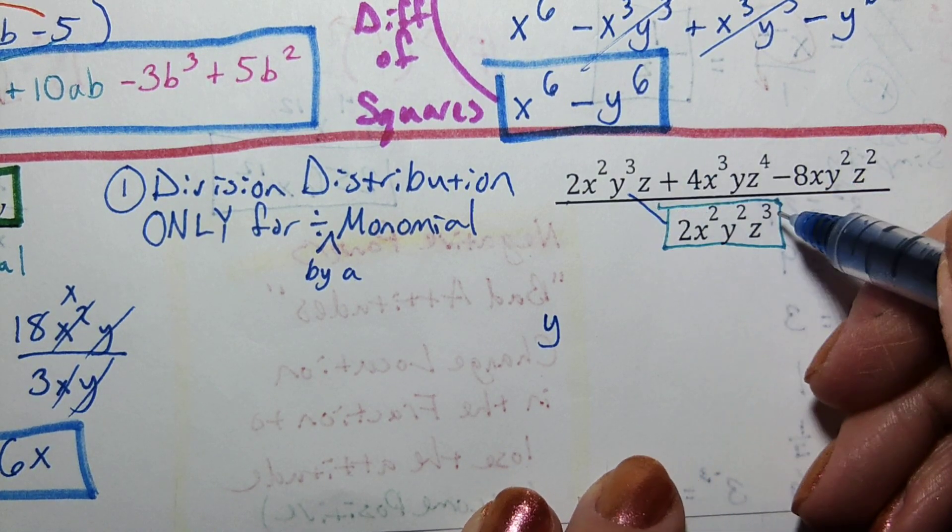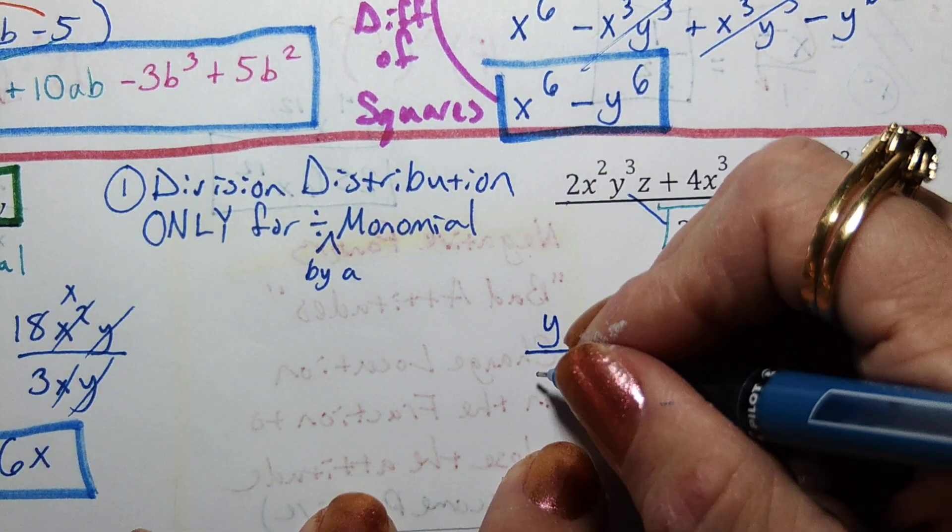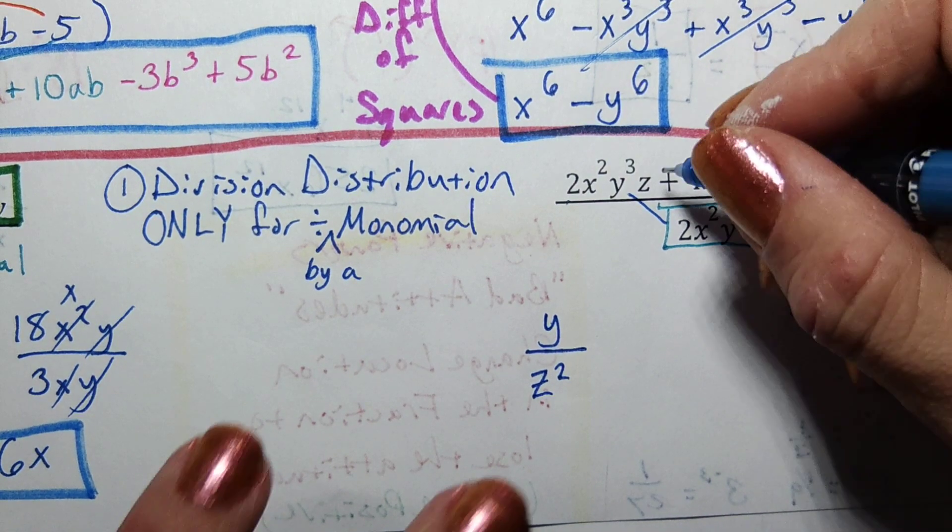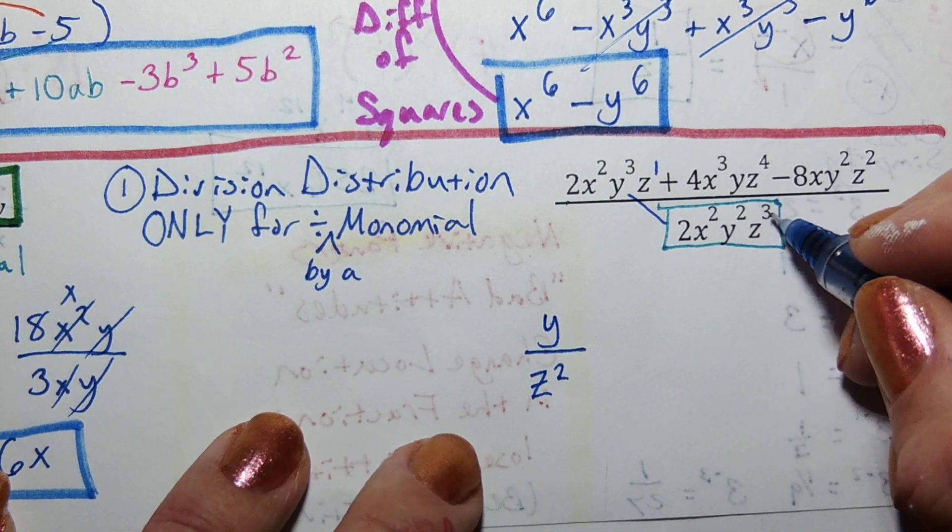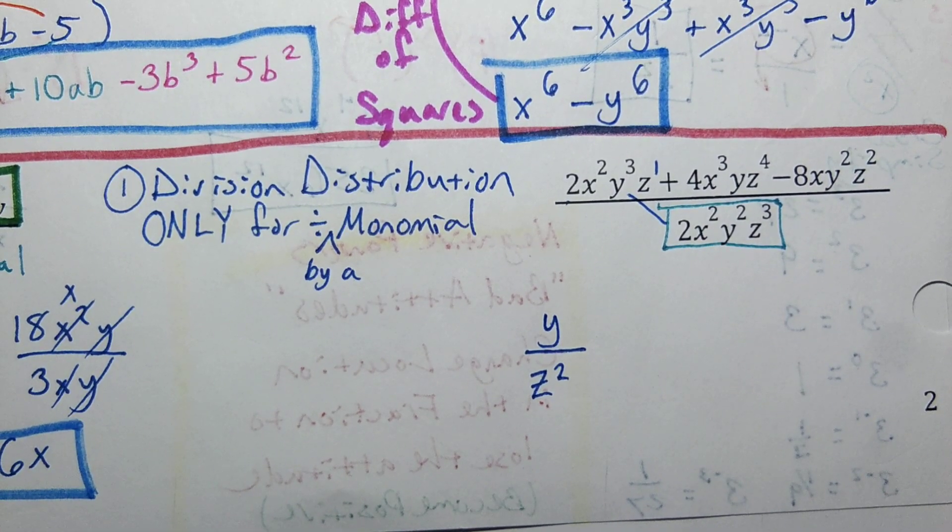Now here's where it gets a little bit tricky. What's z divided by z^3? Can we take a z out of both of those? Yeah, and then we'd be left with z^2 on the bottom. So because this is z^1 and this is z^3, I could take a z out of both of those and that leaves me with z^2 on the bottom.